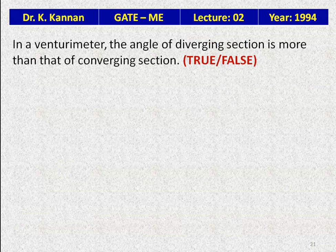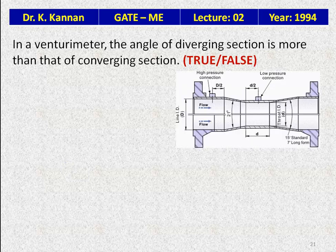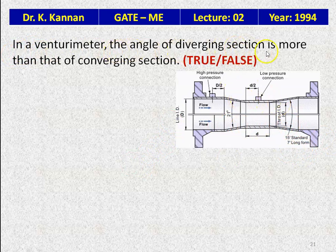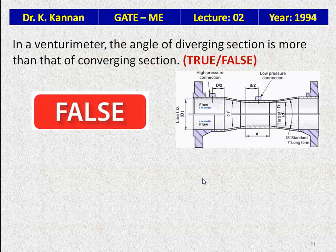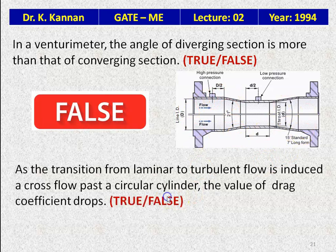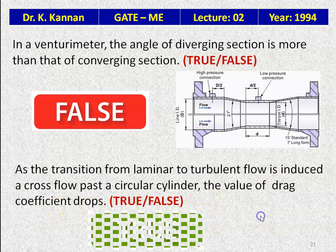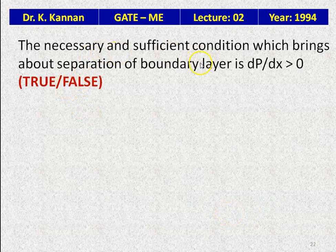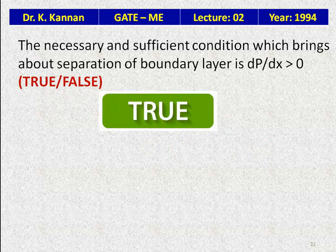In a venturimeter, the angle of the diverging section is more than that of the converging section — this is false, because the converging section has a larger angle (21°) than the diverging section (5°–15°). As the transition from laminar to turbulent flow is induced in cross flow past a circular cylinder, the drag coefficient drops — true. The necessary and sufficient condition for boundary layer separation is dP/dx > 0 — true.